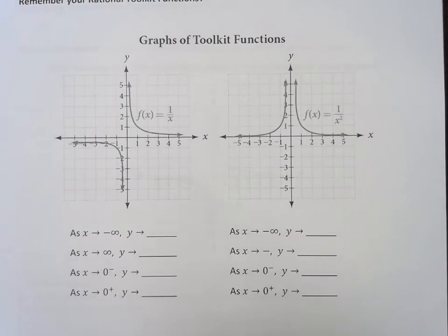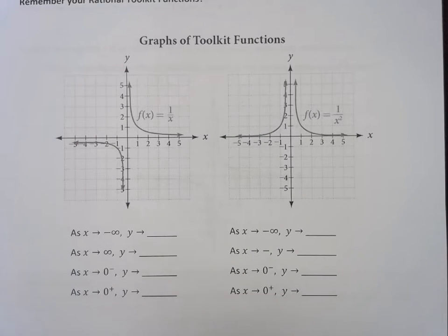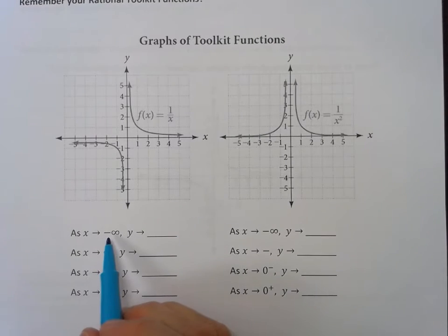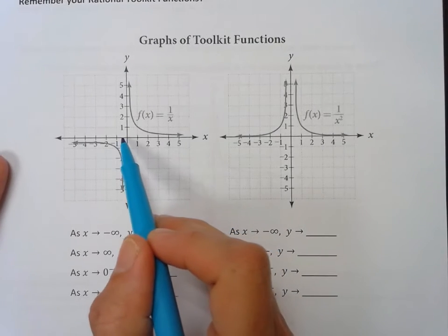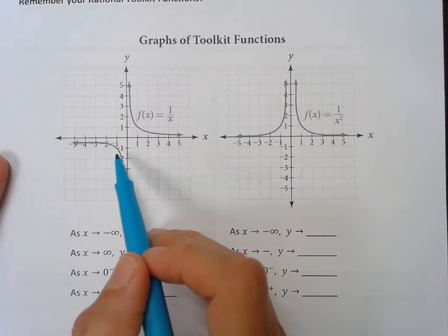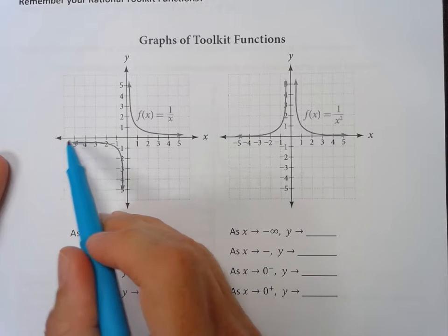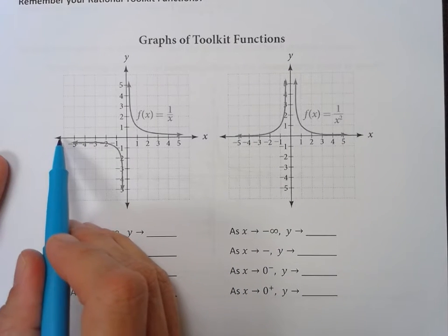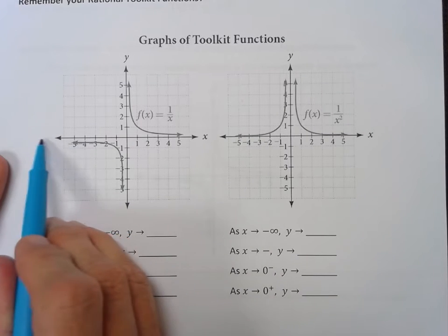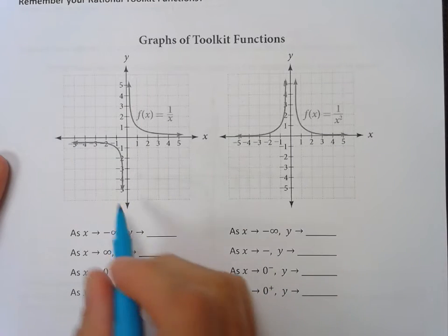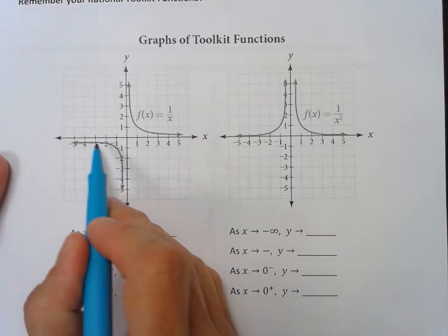Looking at the reciprocal function, as x goes to negative infinity, what does y do? So as x is going this direction, y is going this direction, which means it's getting closer and closer to where? Here, this line. This line is where y is zero. So as x gets smaller, y goes towards zero.